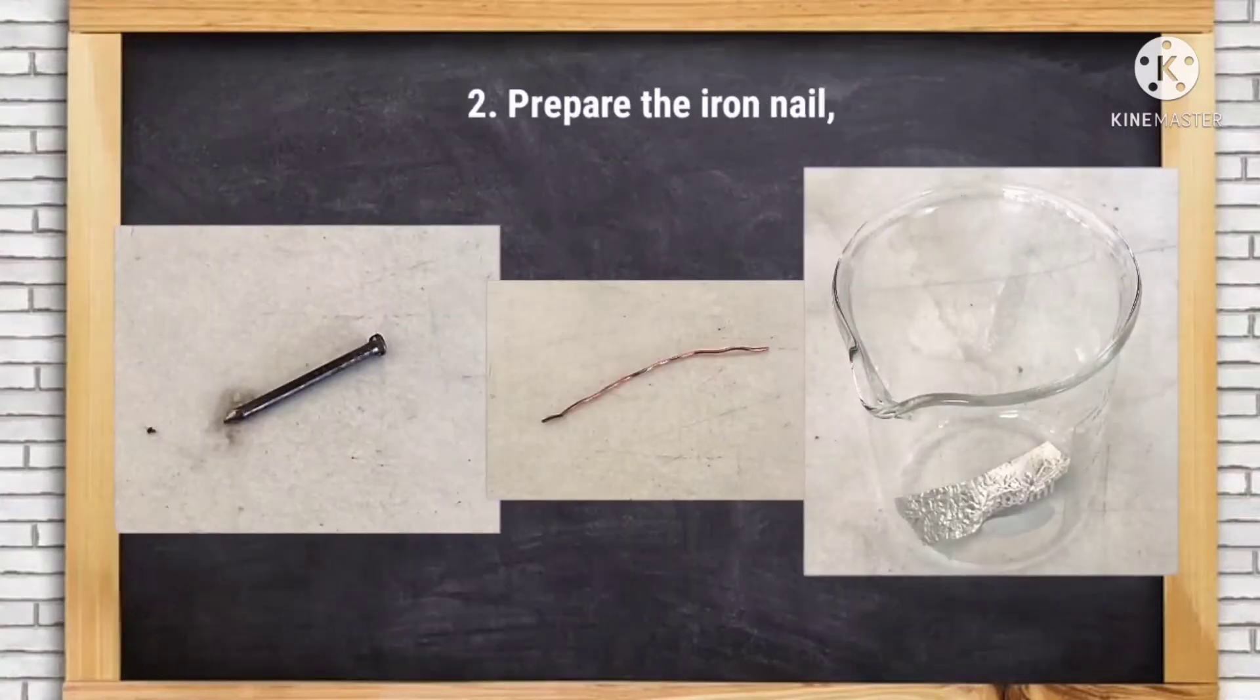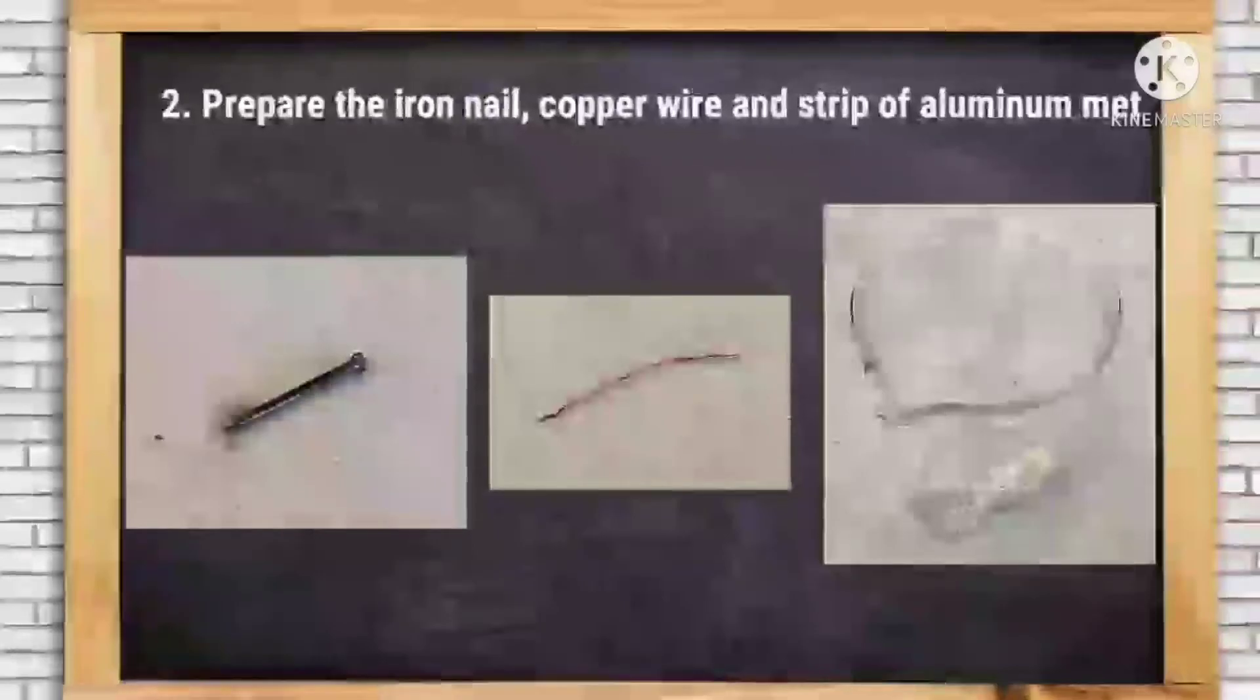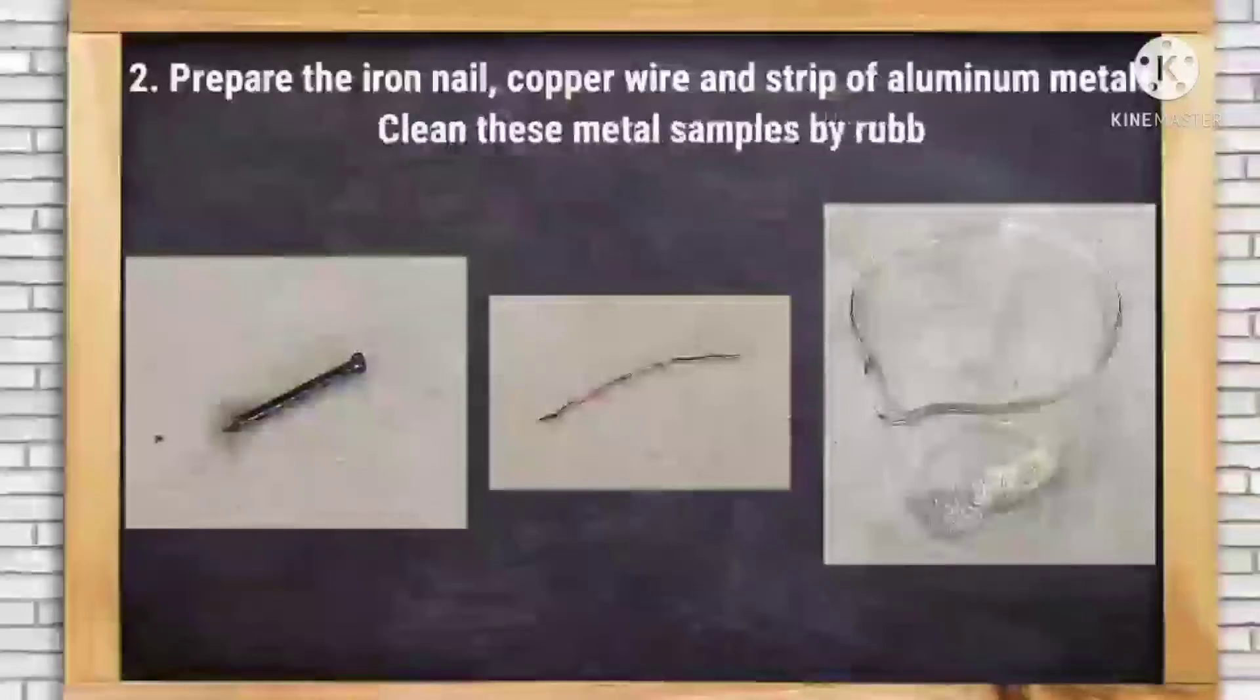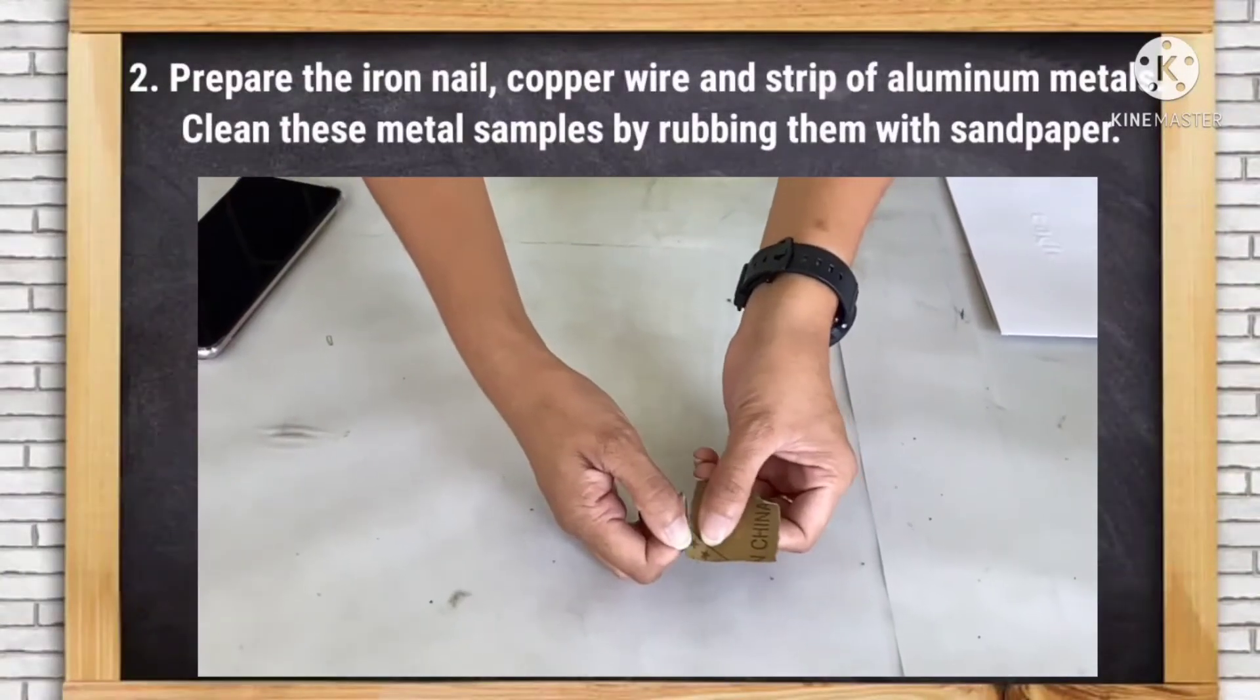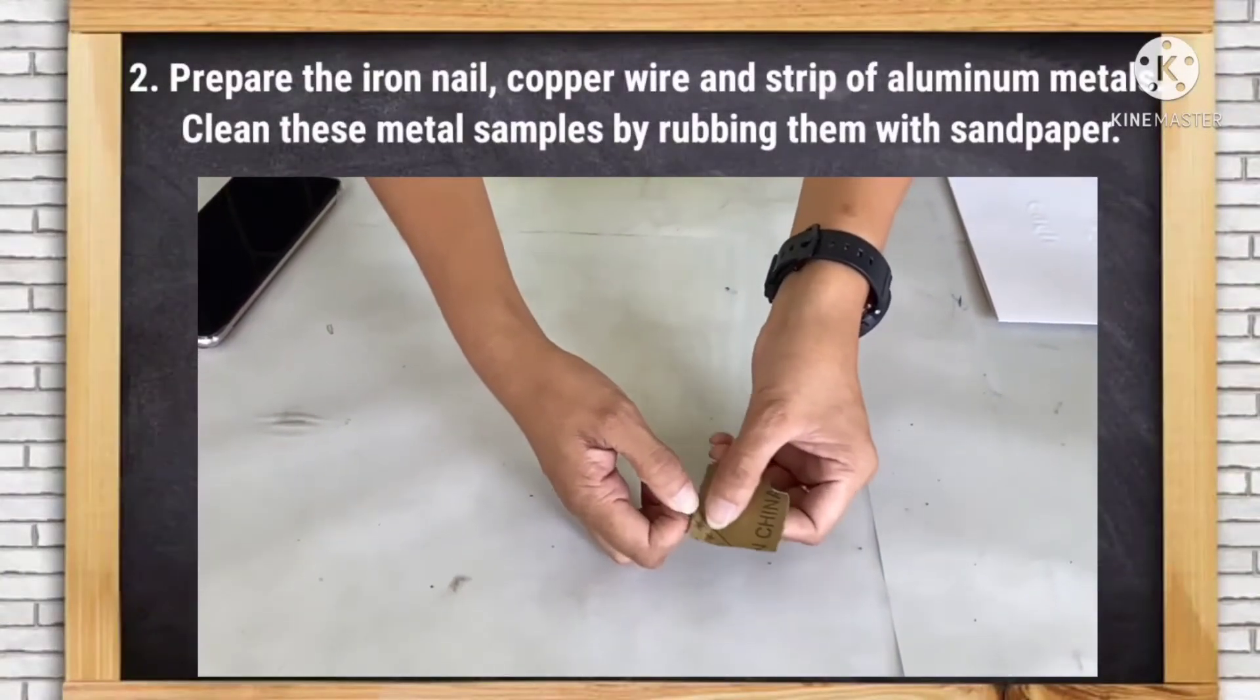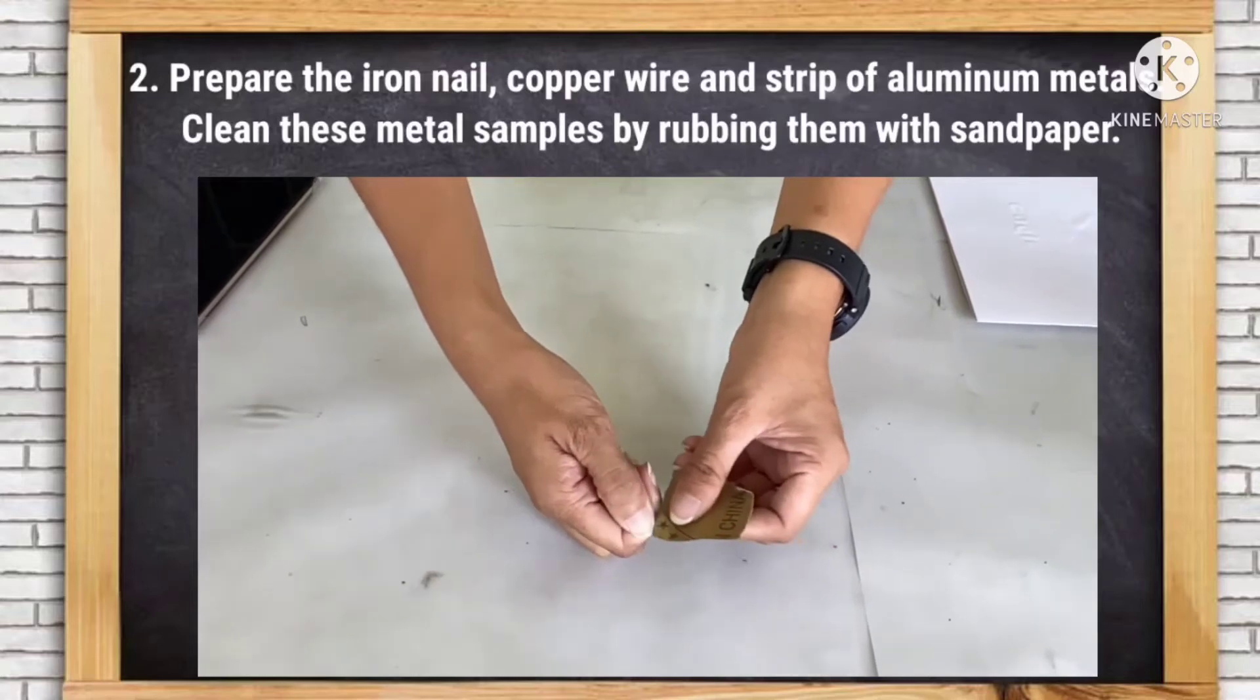Number two, prepare the iron nail, copper wire, and strip of aluminum metals. Clean these metal samples by rubbing them with sandpaper.